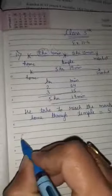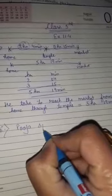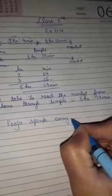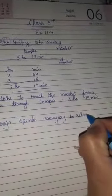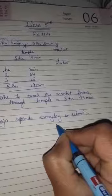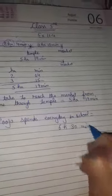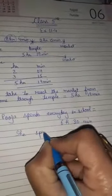Pooja spends every day in school is equal to 6 hours 30 minutes. She spends in school how many days? 5 days.